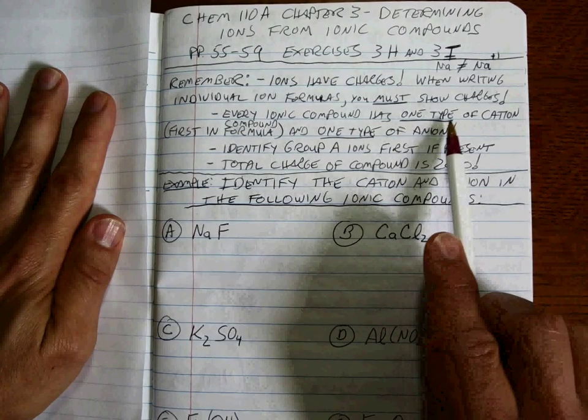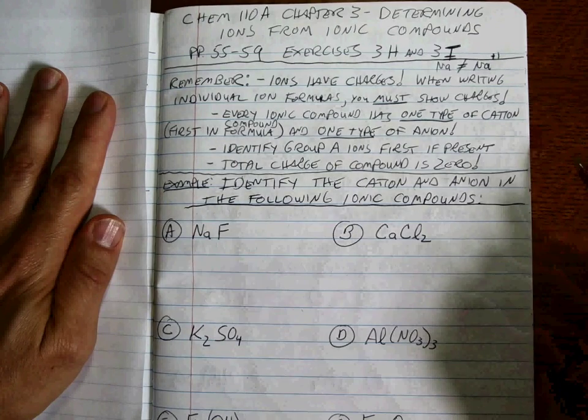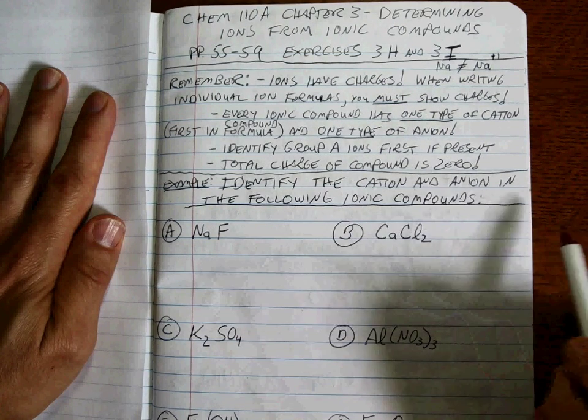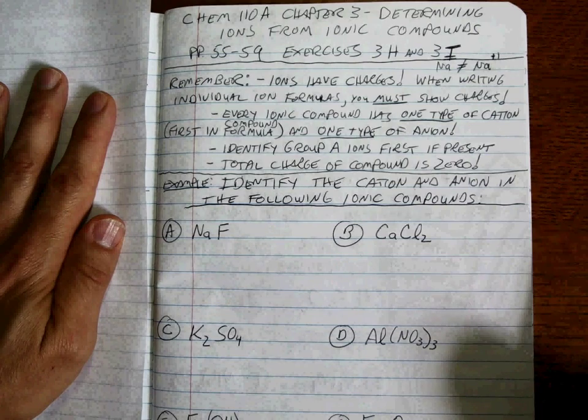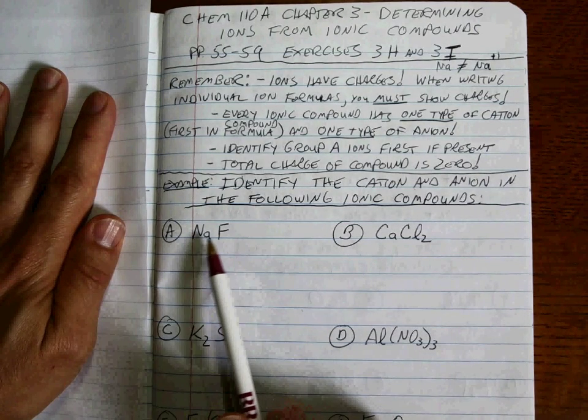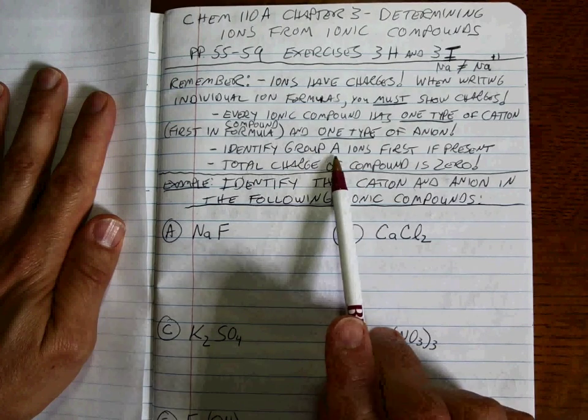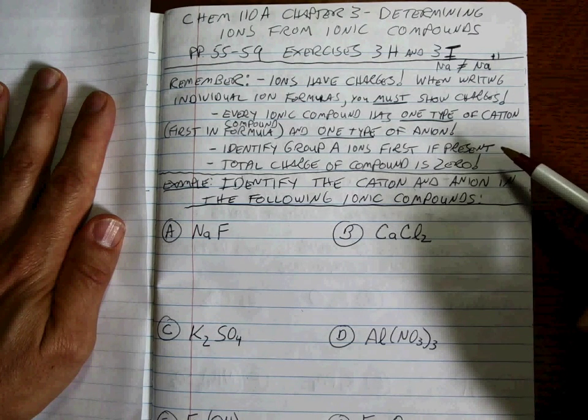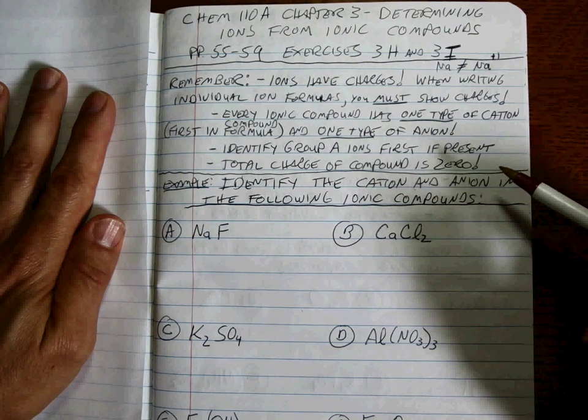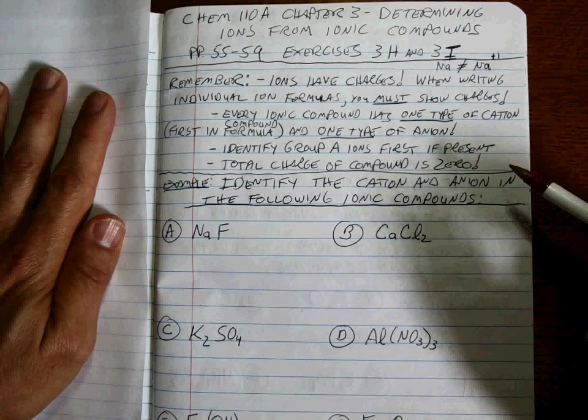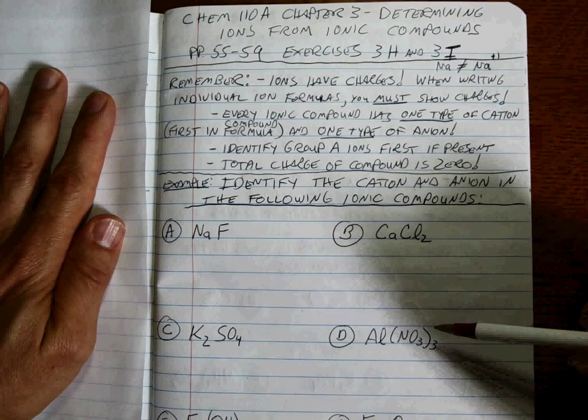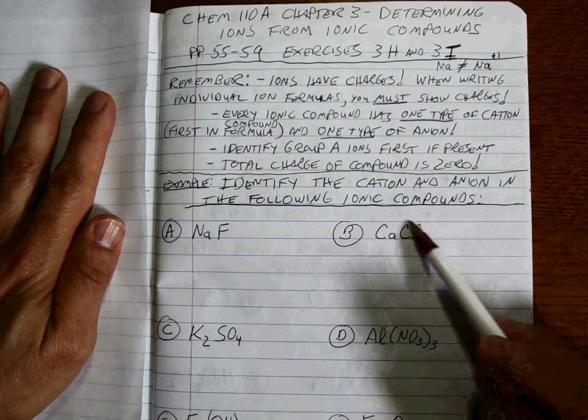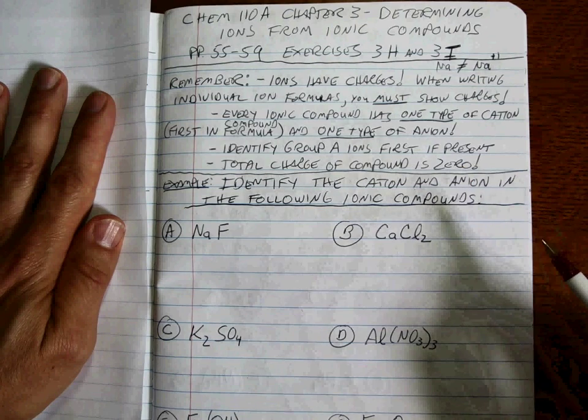Second point, every ionic compound has one type of cation combined with one type of anion. Cation always comes first. So once you identify the cation, the rest has to be the anion. It's good to be able to identify the group A ions first because you can tell exactly what they are. It's also really good if you have a polyatomic ion, if you memorized all the bolded polyatomic ions on page 58. Because all you need is one charge and you can get the other one simply because the total charge of every ionic compound is zero.